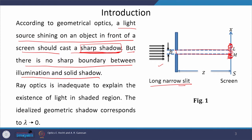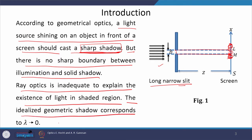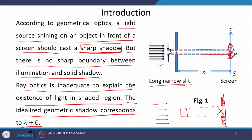If we keep decreasing the size of the slit we see that light starts to spread out and go into the shadow region. This cannot be explained through geometrical optics or ray optics. Ray optics is inadequate to explain the existence of light in the shaded region. Therefore, the idealized geometrical shadow corresponds to lambda equal to 0. When we talk about the shadowing effect — suppose this is an object and we launch a parallel beam of light onto it — then on the screen in ray optics we expect light on the sides but no light in the area right behind the object. But if the size of the object or aperture is very small, we see that light is also there in the dark region.